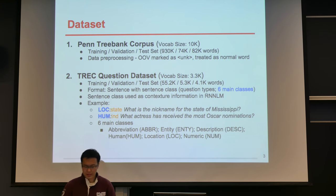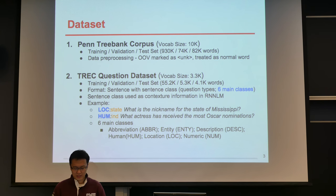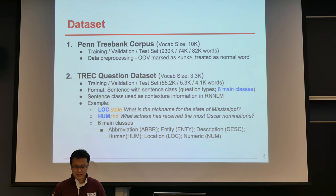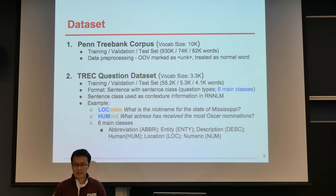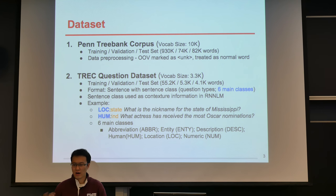There are two datasets that we used in the experiment. The first one is the Penn Treebank corpus of the Wall Street Journal dataset, which is the standard dataset commonly used by researchers for language model evaluations. The smaller dataset we used is called the TREC question dataset, used to evaluate our context-enabled neural network language model. Each sample consists of a sentence which is a question, and the corresponding sentence type, inferring what the question is asking about — whether it is asking about a location, a person, or an entity. These sentence class labels were used as the context feature in our language model.